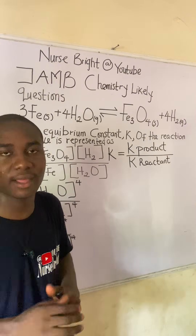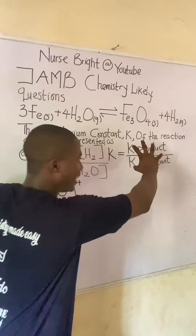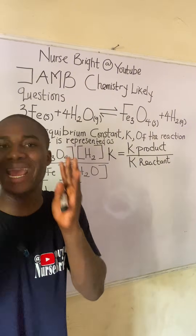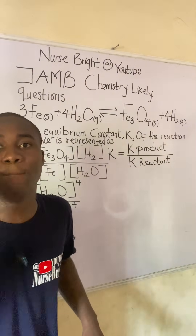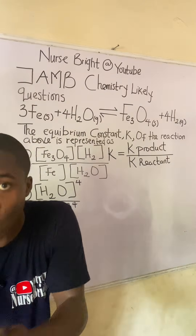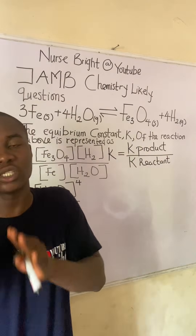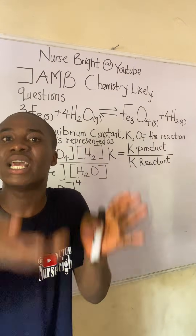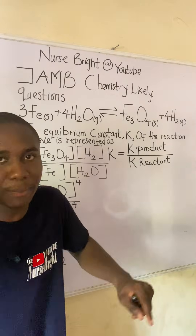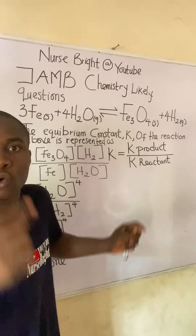This must be noted: to write the equilibrium constant expression for any reaction, solid and liquid species do not appear in the expression — when we see them in the reaction we cancel them out, because they exist as one. But gases (g) and aqueous species (aq) do appear in the expression. So before we start, we check both the product and reactant sides for solid and liquid species to cancel them out.